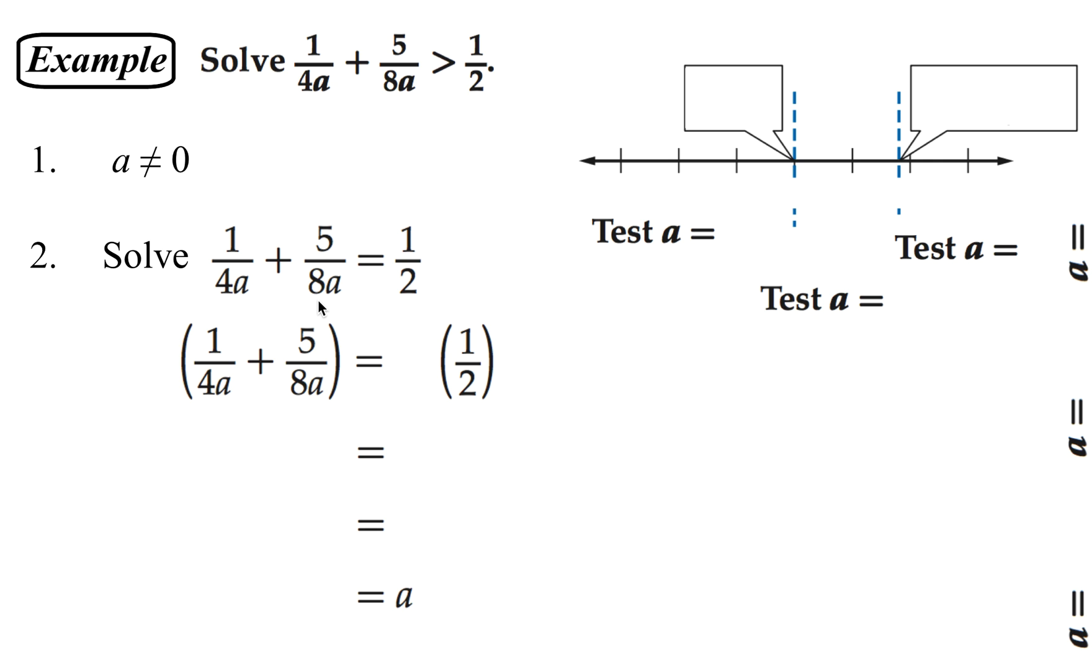So our least common denominator in this example is going to be 8A. So I'm going to multiply both sides by 8A and distribute that through. So 8A times the first term would give me 8A over 4A, which is 2. And 8A times 5 just gives me a 5, because the 8As cancel. And then over on the right-hand side, I end up with 4A.